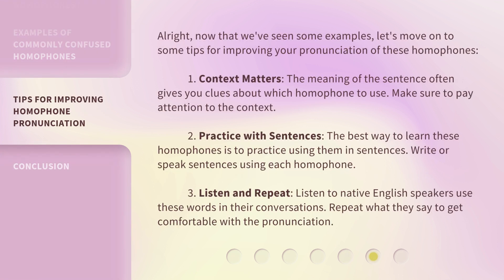Now that we've seen some examples, let's move on to some tips for improving your pronunciation of these homophones. One: context matters — the meaning of the sentence often gives you clues about which homophone to use, so make sure to pay attention to the context. Two: practice with sentences — the best way to learn these homophones is to practice using them in sentences; write or speak sentences using each homophone. Three: listen and repeat — listen to native English speakers use these words in their conversations and repeat what they say to get comfortable with the pronunciation.